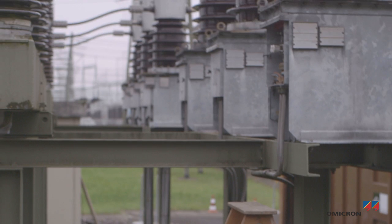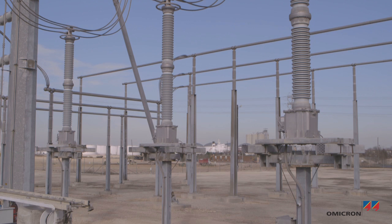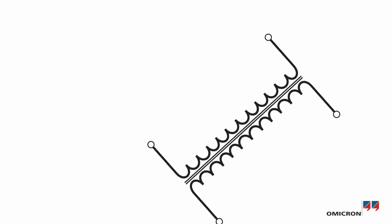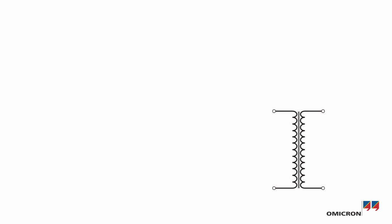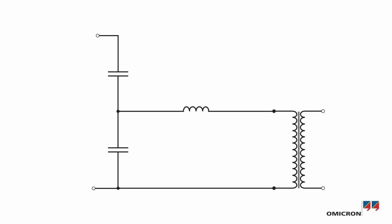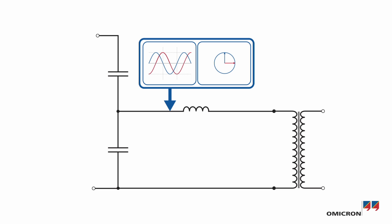The majority of voltage transformers used today are either inductive VTs or capacitive voltage transformers. Capacitive voltage transformers consist of an inductive VT, a high voltage capacitive divider, and a compensating reactor. The compensating reactor is designed to resonate with the primary capacitances at rated frequency, helping to compensate the phase shift due to the high voltage capacitive divider.